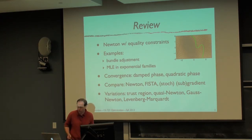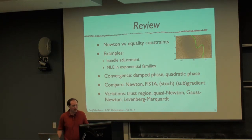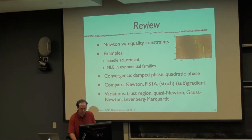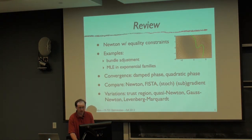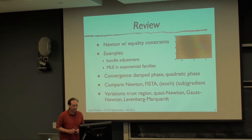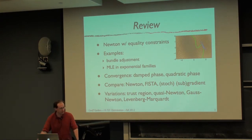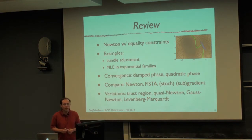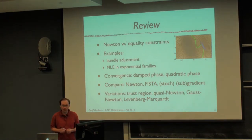We had been doing Newton's method for a while before that. With equality constraints, basically what you wanted to do was look for the tangent to the constraint and the tangent to a level set of our function. So here's a level set of our function and here's our constraint, and you want them to share a tangent. We gave a couple of examples: bundle adjustments and maximum likelihood inference in exponential families.